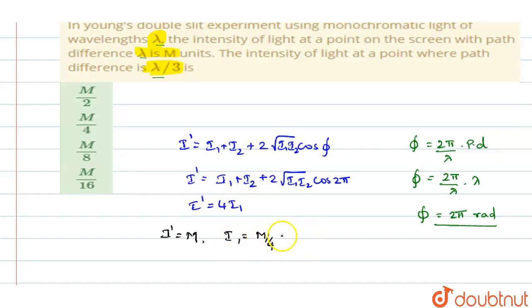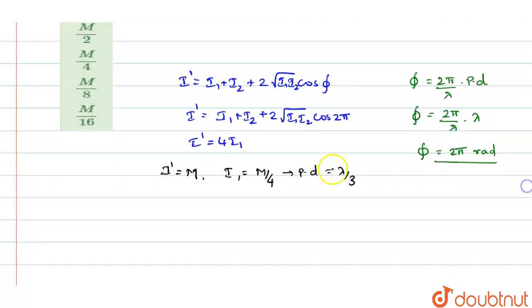And so in this, the path difference will be lambda by 3. So you have to find path difference as lambda by 3. So if path difference is lambda by 3, then the phase difference will be 2π by lambda into lambda by 3. So you will get it as 2π by 3.